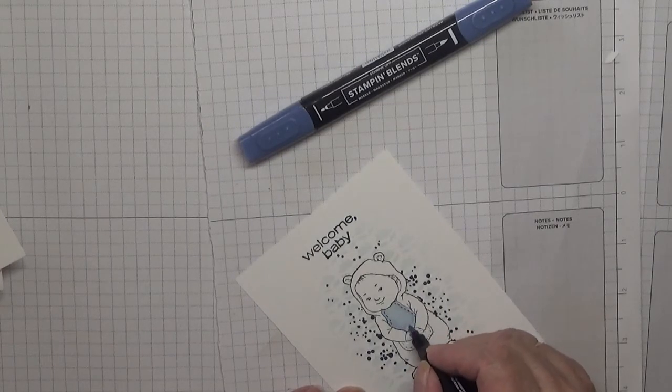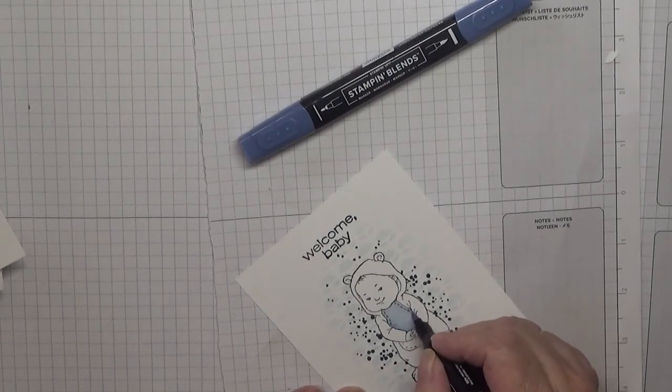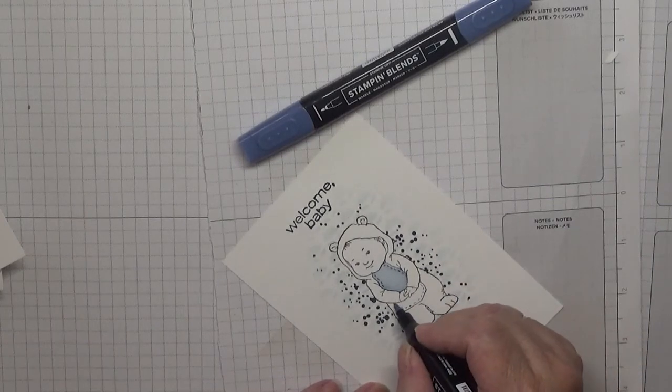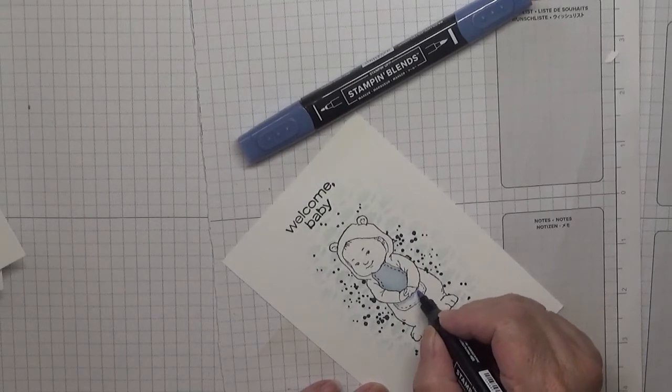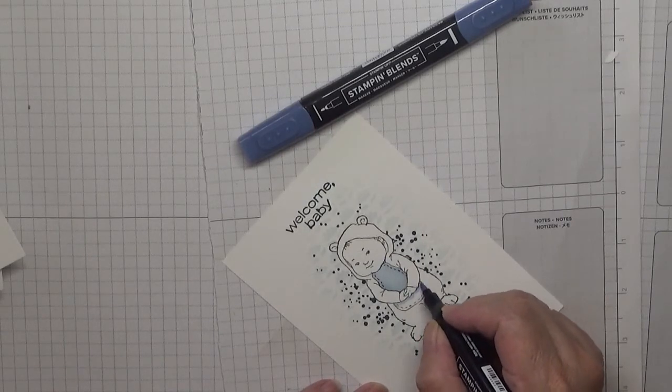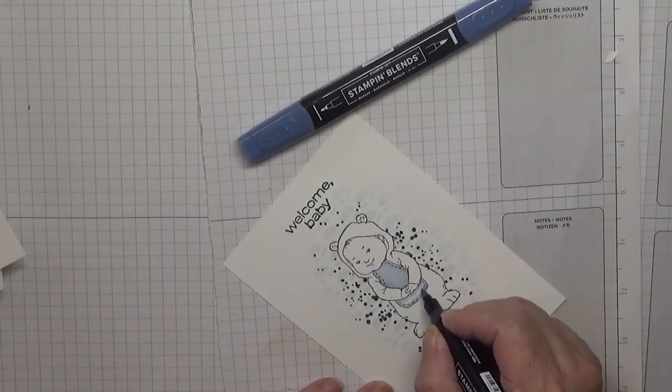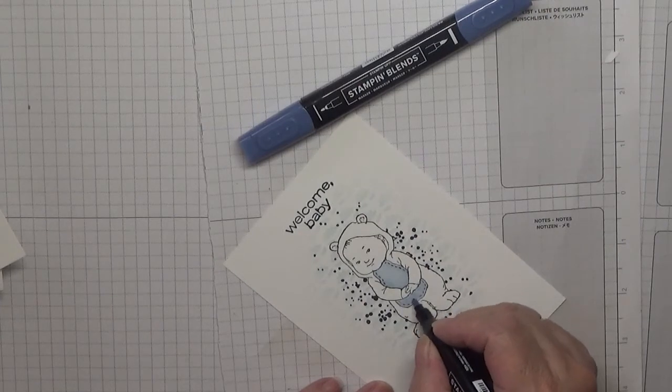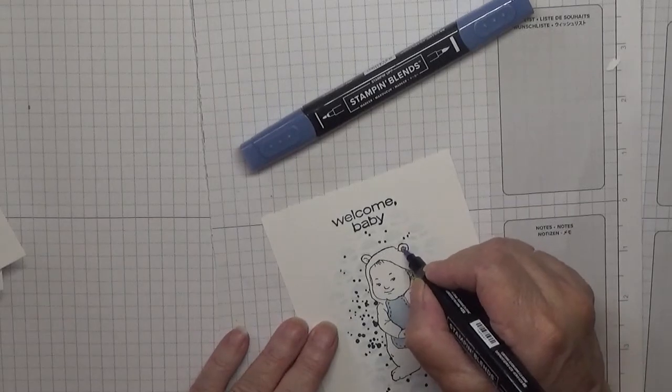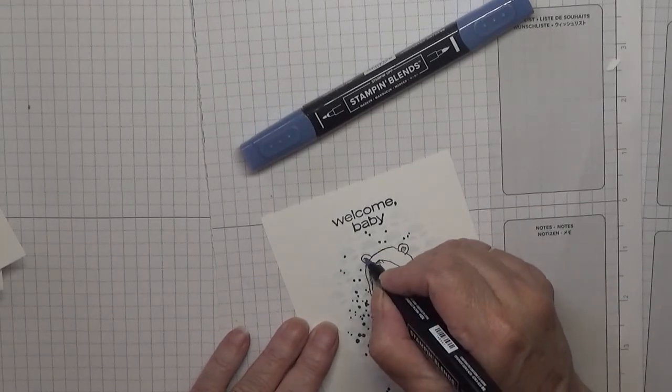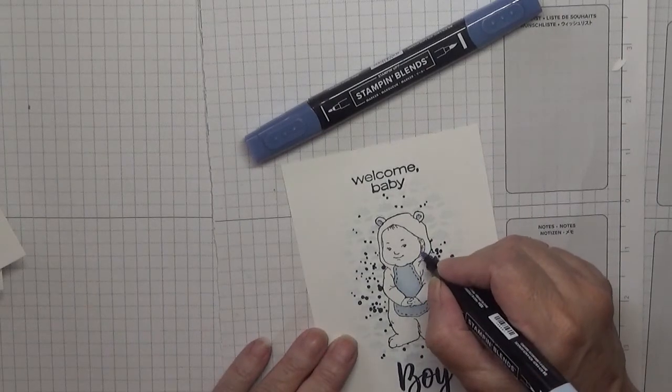I think when I was filming last week's batch of cards, I didn't have any coloring to do. This batch of cards, every one of them's got coloring. And I'm going to color the inside of his ears in blue and the inside of his hat.